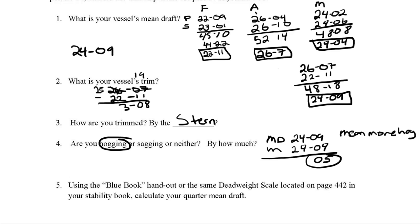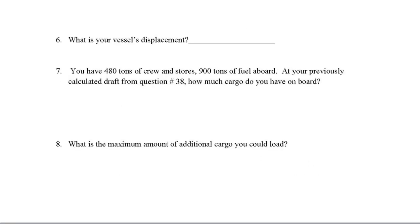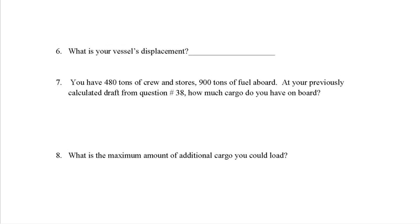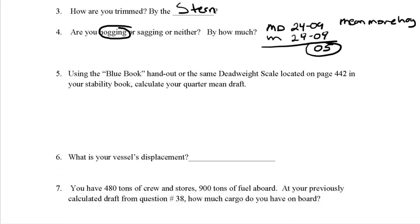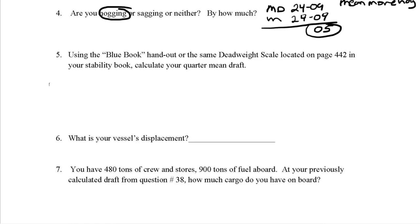Now we go to the blue book, but first we need the quarter mean draft — also called the mean of means. Because the midsection is where most of the vessel is, we use this formula: forward draft plus aft draft plus six times the midship draft, all divided by eight.